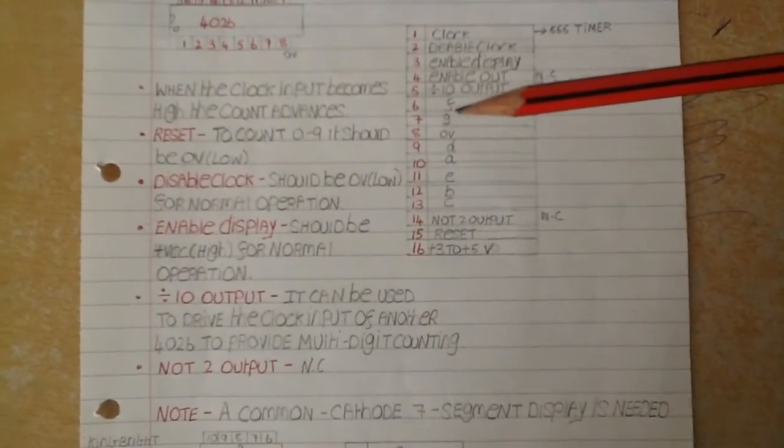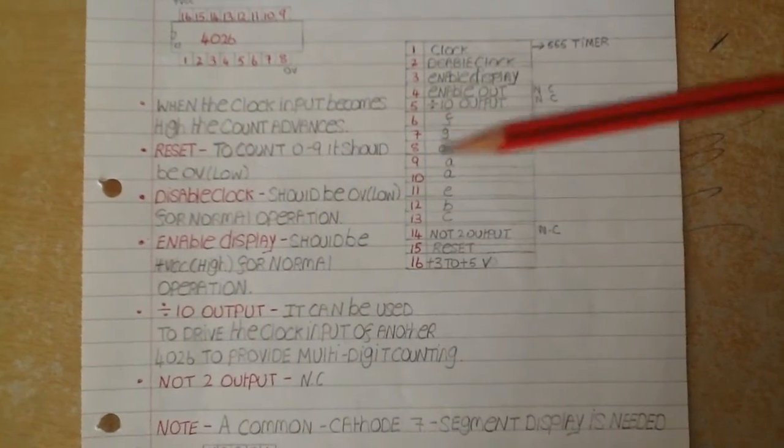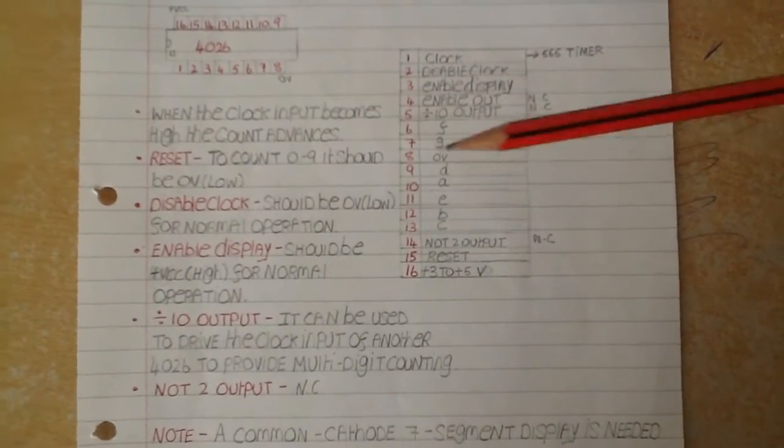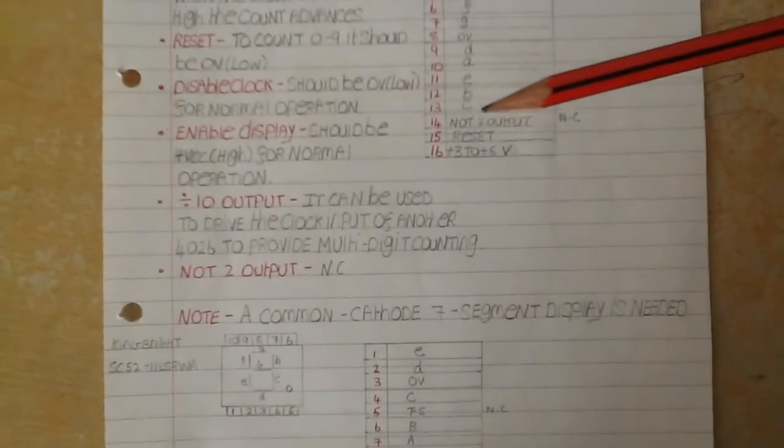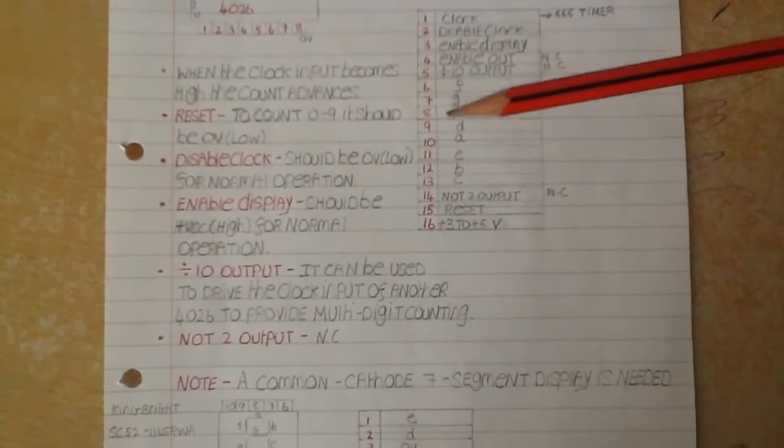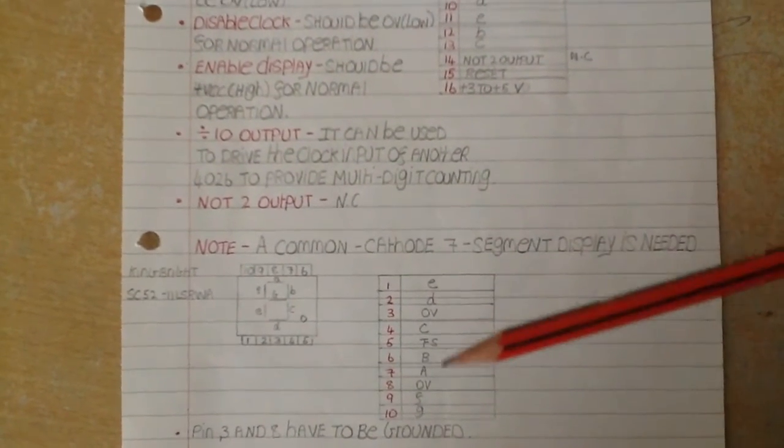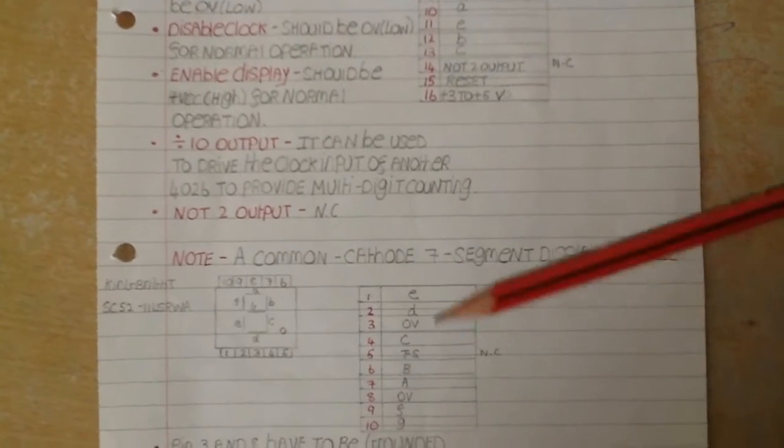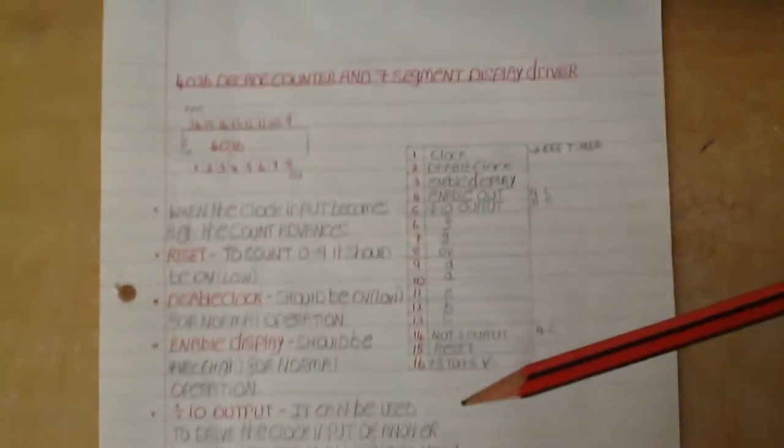So what you do is, as you can see here on the actual 4026 chip, we have letters from A down to G. Then you just connect them to the corresponding pins that match up here on the 7-segment display. And that is pretty much it.